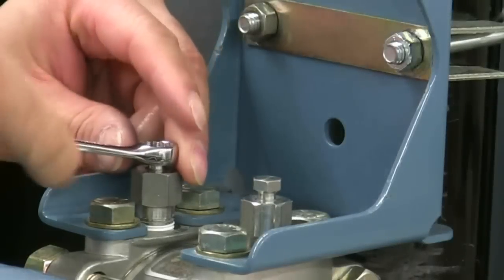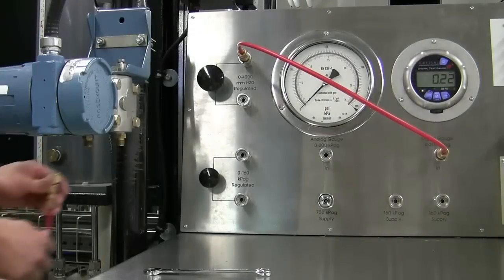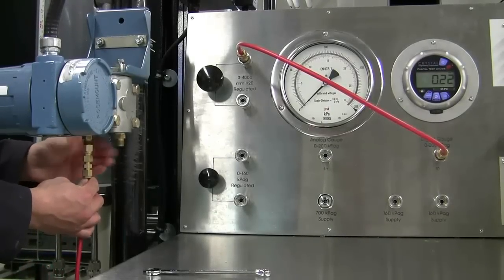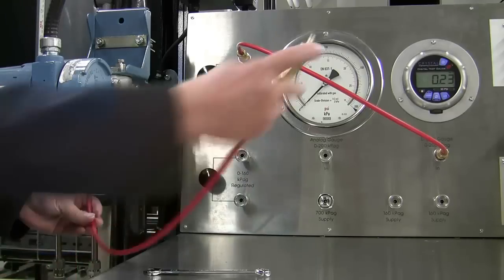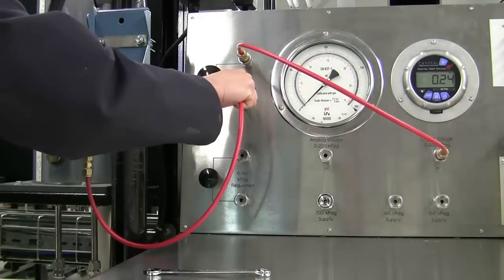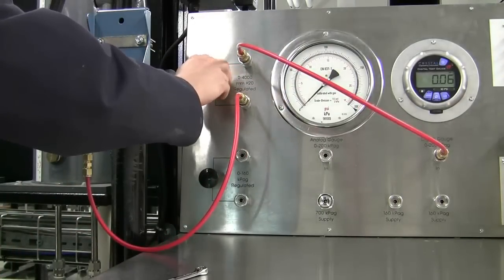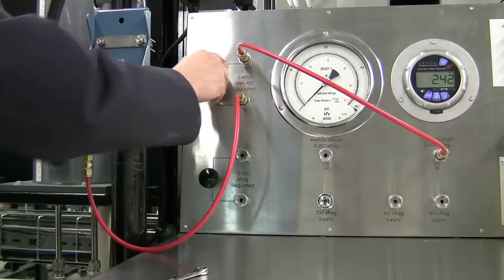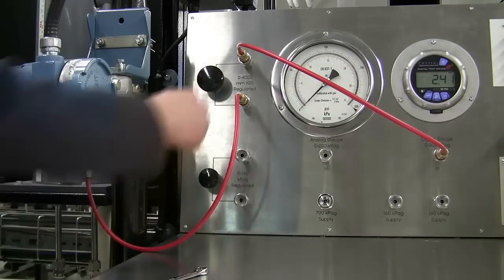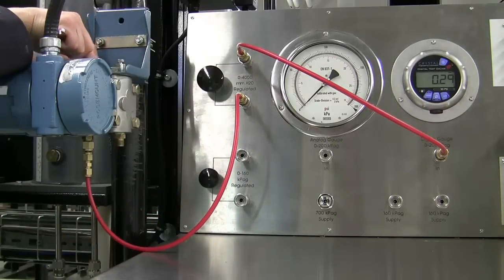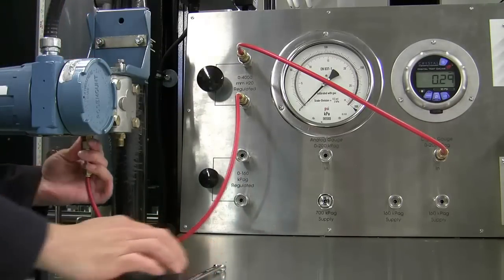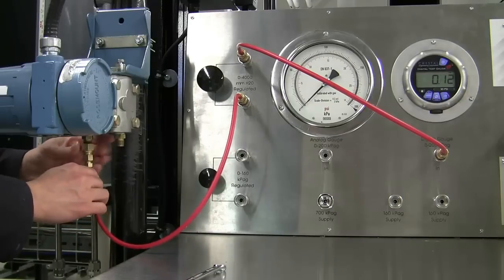The next step is to clean and dry the DP cell. Begin by opening both bleed valves on top of the transmitter. This will allow any trapped water to drain out of the transmitter. Connect the tubing to the high side of the transmitter. You only need to hand tighten the fittings for now. Once the tubing is connected to the second regulator output, apply the air until you begin to hear a hissing sound. Let the air dry the high side of the DP cell for a few seconds. Then remove the air and close the bleed valve. Repeat these steps for the low side of the DP cell.